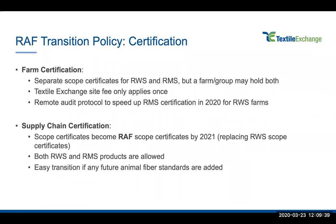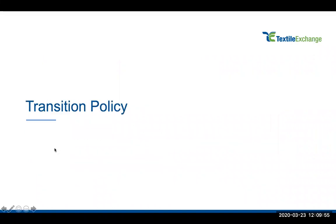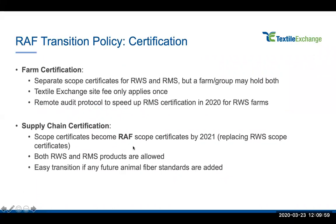We are allowing remote audits to speed up RMS certification in 2020 for farms already certified to the Responsible Wool Standard. In the supply chain the change is bigger — scope certificates become Responsible Animal Fiber scope certificates by 2021, replacing the RWS scope certificates as they are reissued. Facilities certified to the Responsible Animal Fiber Standard in the supply chain can produce both RWS and RMS products. This is also intended to ensure an easy transition if in the future we add other animal fiber standards to our system. Suppliers currently certified to the RWS can now start adding RMS products to their scope certificate.